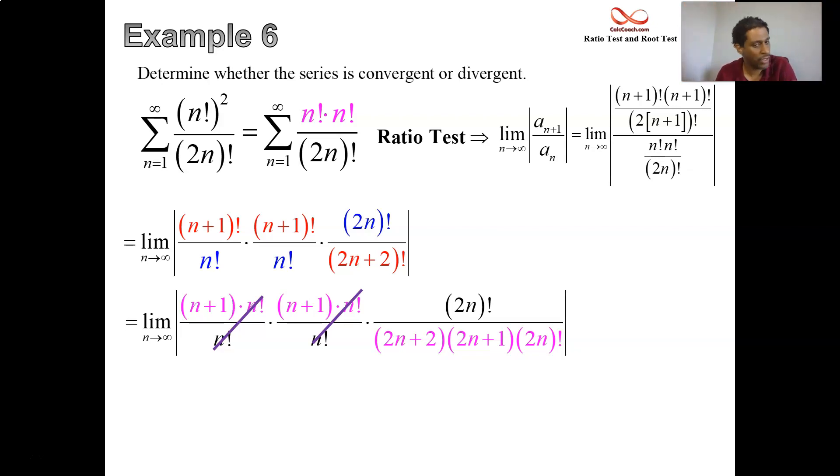Sometimes you might have to take off more than one term until you get down. It's like having 5 times 4 times 3 factorial. Now we can cancel. What is left over after all of this? An n plus 1, another n plus 1, on top of... that should say 2n plus 2 and 2n plus 1.